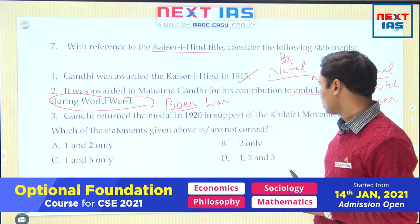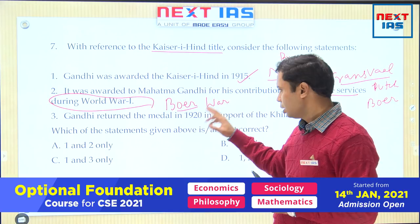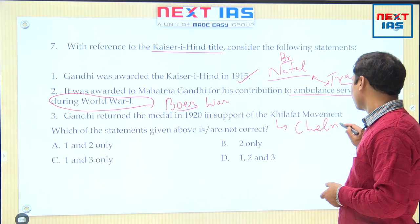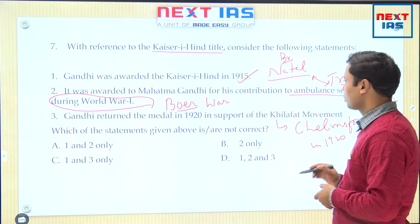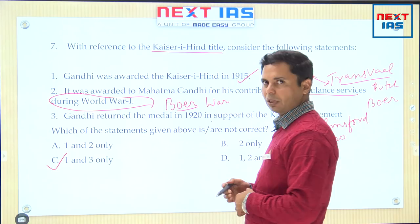Third statement: Gandhi returned the medal in 1920 in support of the Khilafat Movement — that is true. Not only in support of the Khilafat Movement, but he was also very angry because of the Jallianwala Bagh massacre. He returned the Kaiser-i-Hind medal by writing a letter and delivering it to the contemporary Viceroy Lord Chelmsford in 1920. So number 3 is correct, number 1 is correct, number 2 is wrong — 1 and 3 will be the answer, which is C.